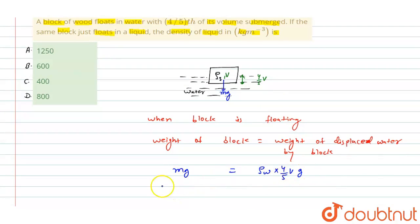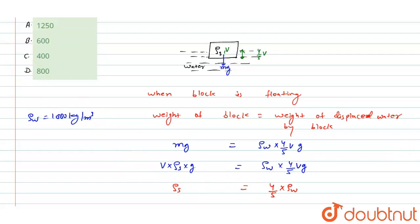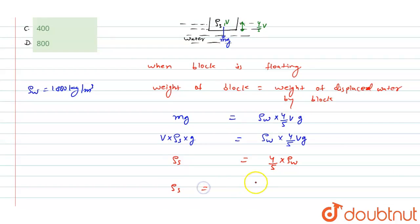Putting in the value of m — that is total volume V times density ρs times g — we get ρs × V × g = ρw × (4/5) × V × g. So ρs = (4/5) × ρw. Since ρw = 1000 kg/m³, ρs = (4/5) × 1000 = 800 kg/m³.